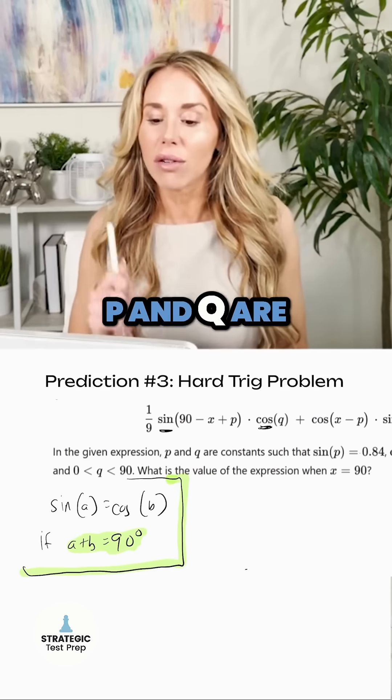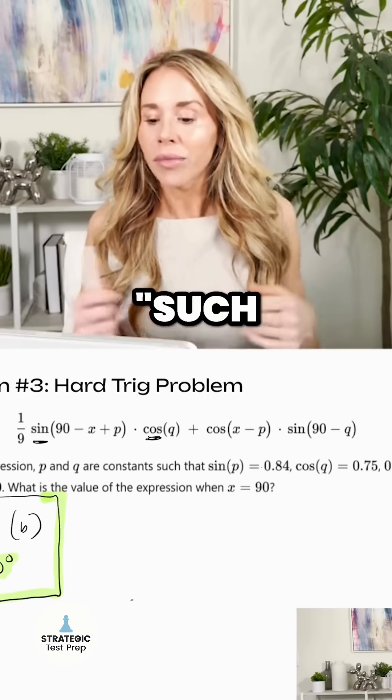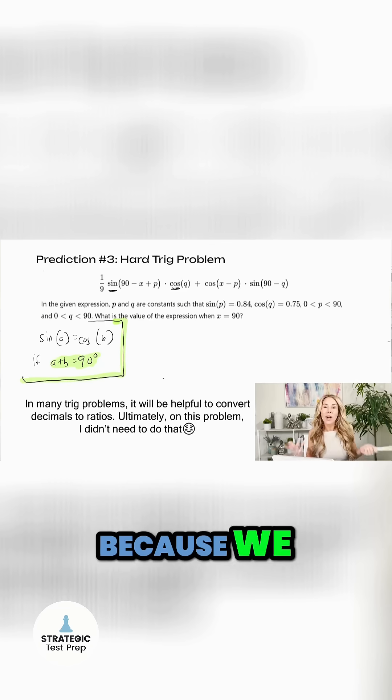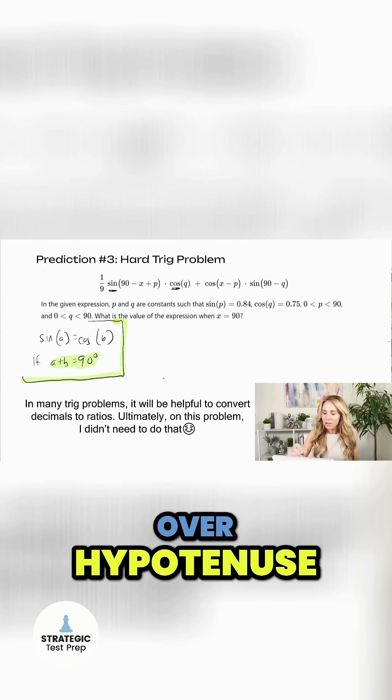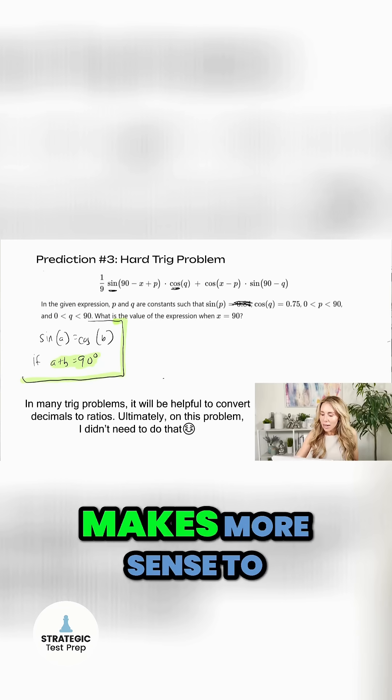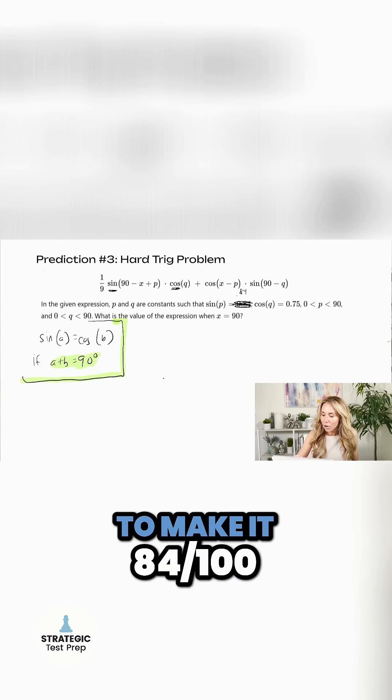In the given expression, P and Q are constants. That just means they're numbers. Such that sine of P equals 0.84. Because we know sine is opposite over hypotenuse, I'm actually going to change this so it makes more sense to me. And I'm going to make it 84 over 100.